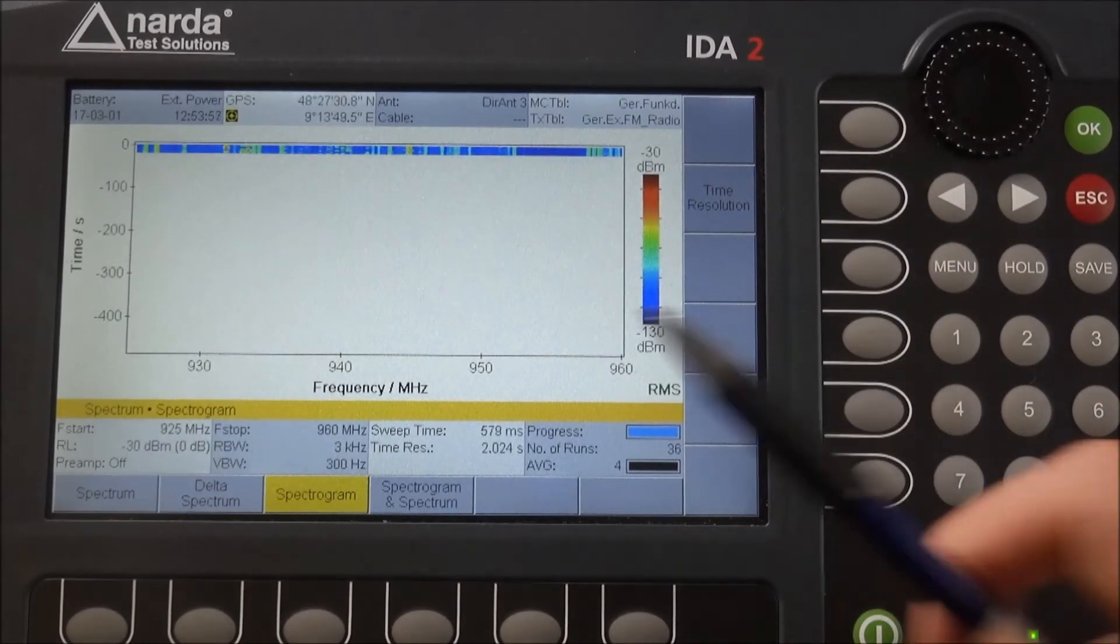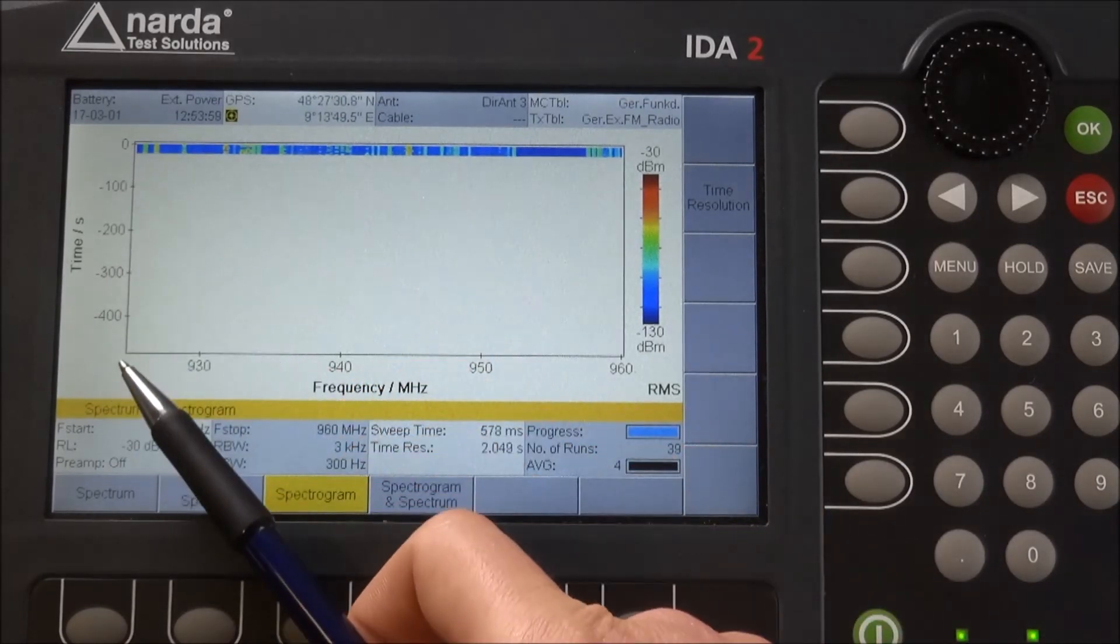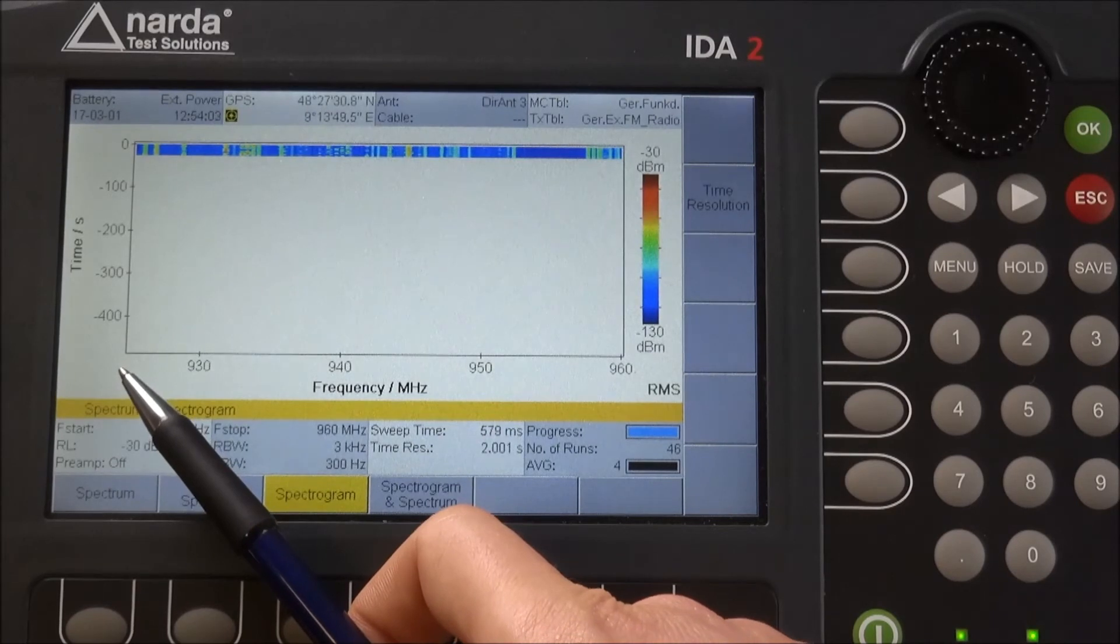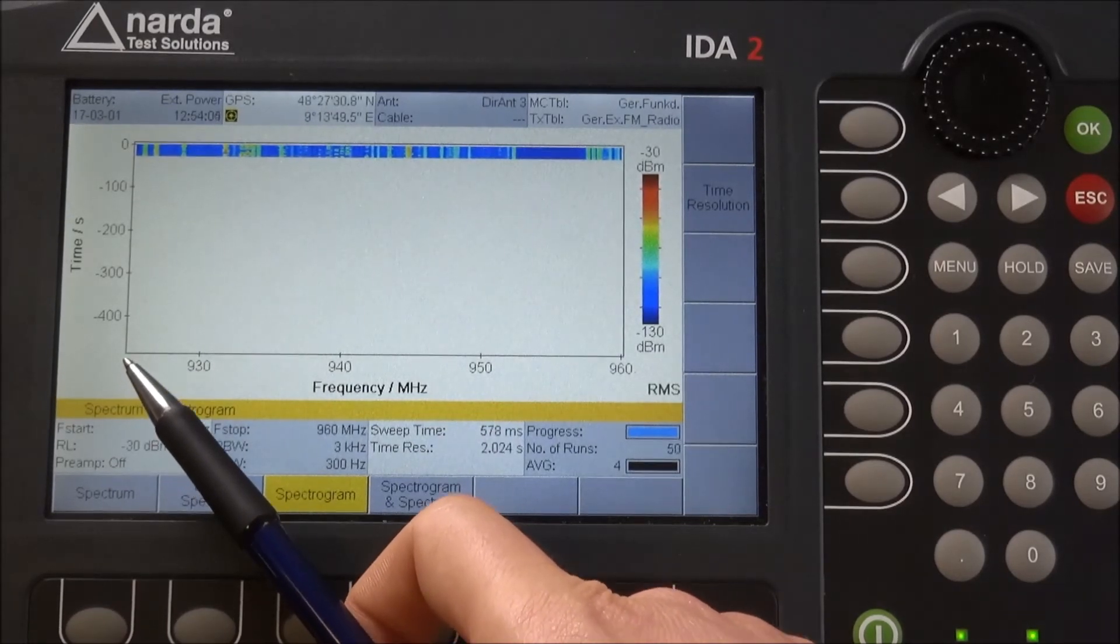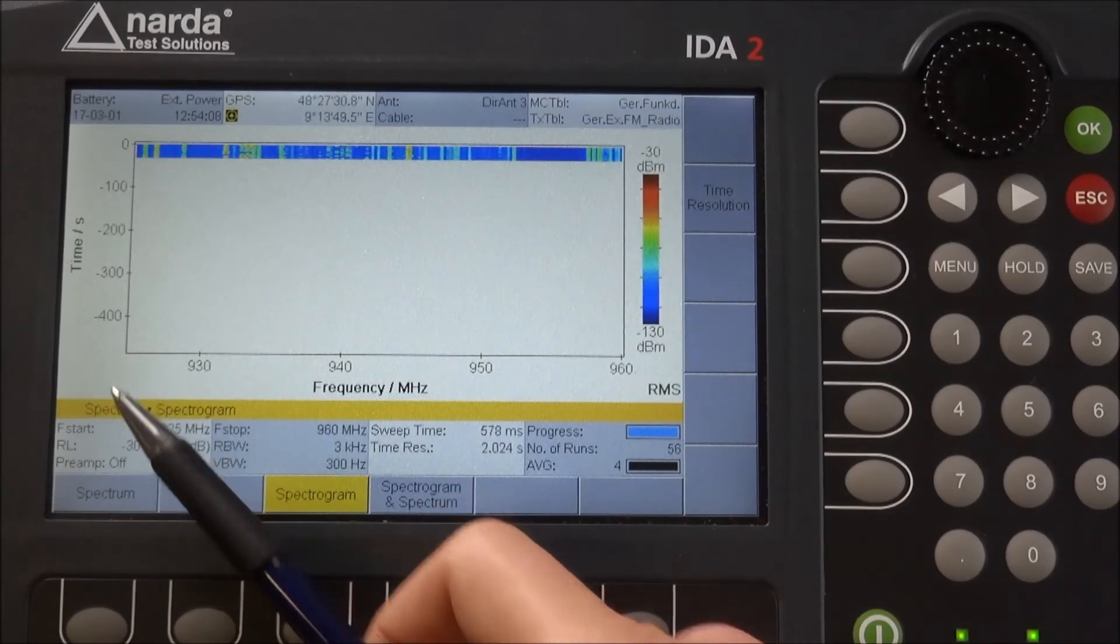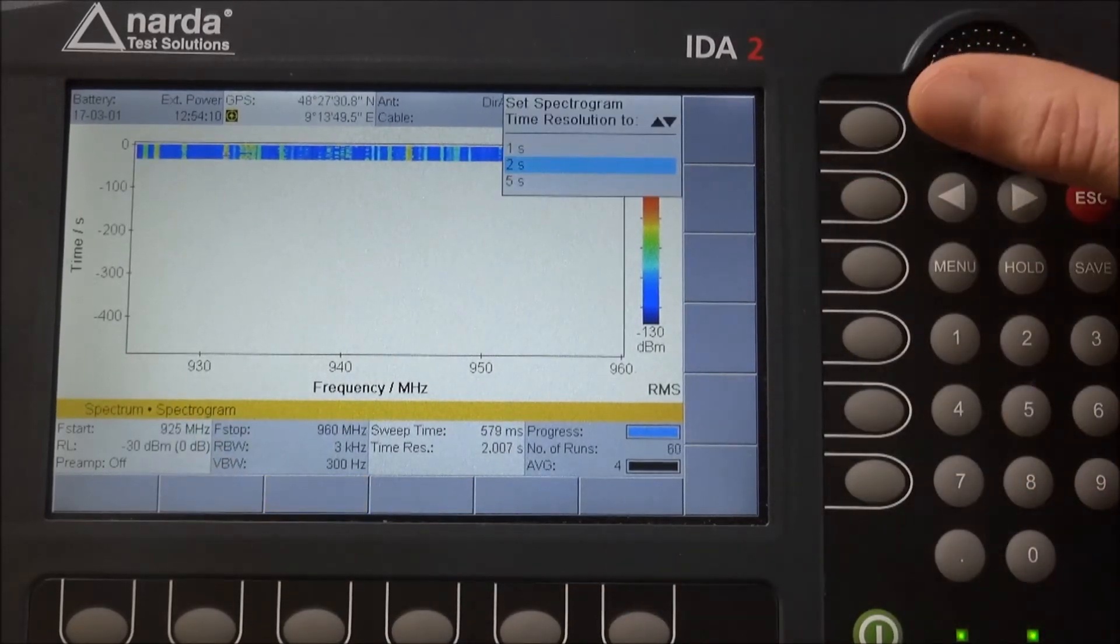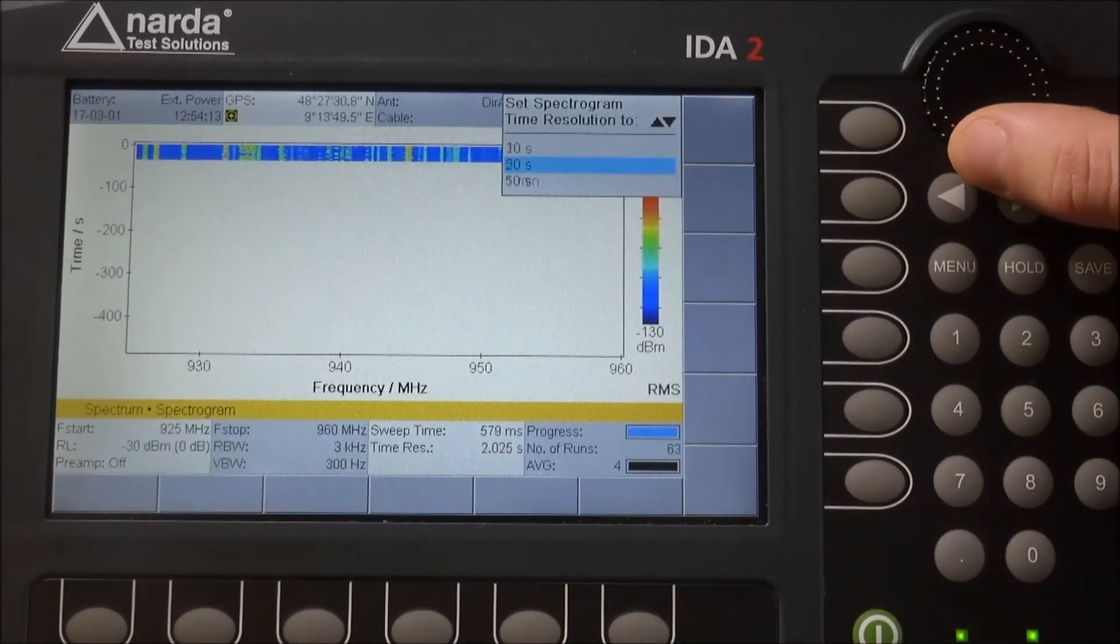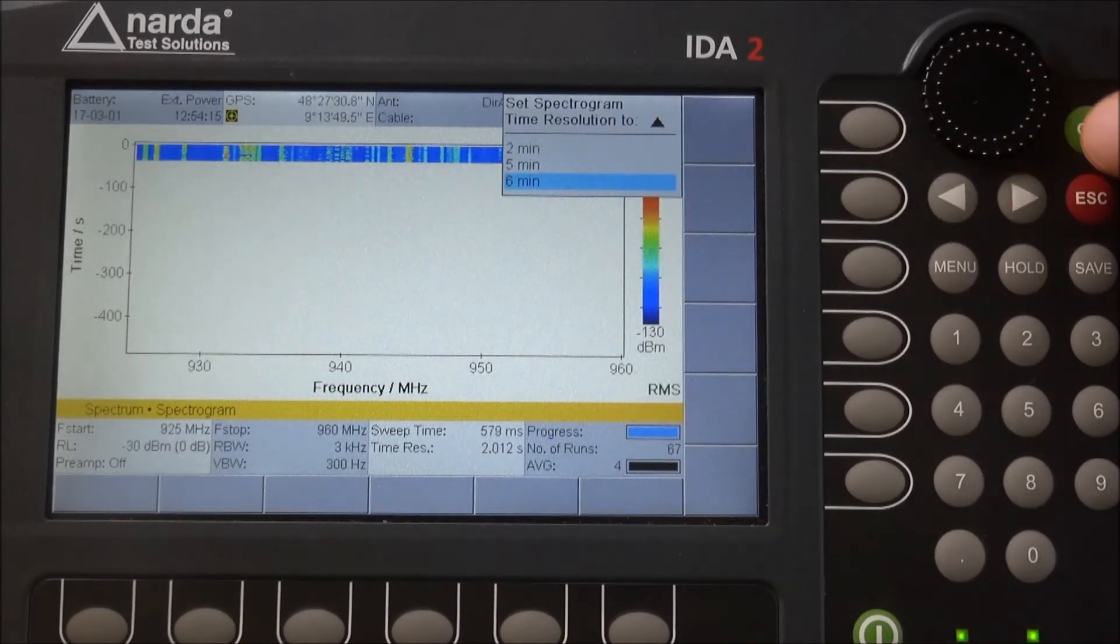By that, the scaling also increases. Right now we can already depict a range of more than 400 or 500 seconds, and depending on our time resolution setup, we can go to daily measurements covering one entire spectrogram for one entire day.